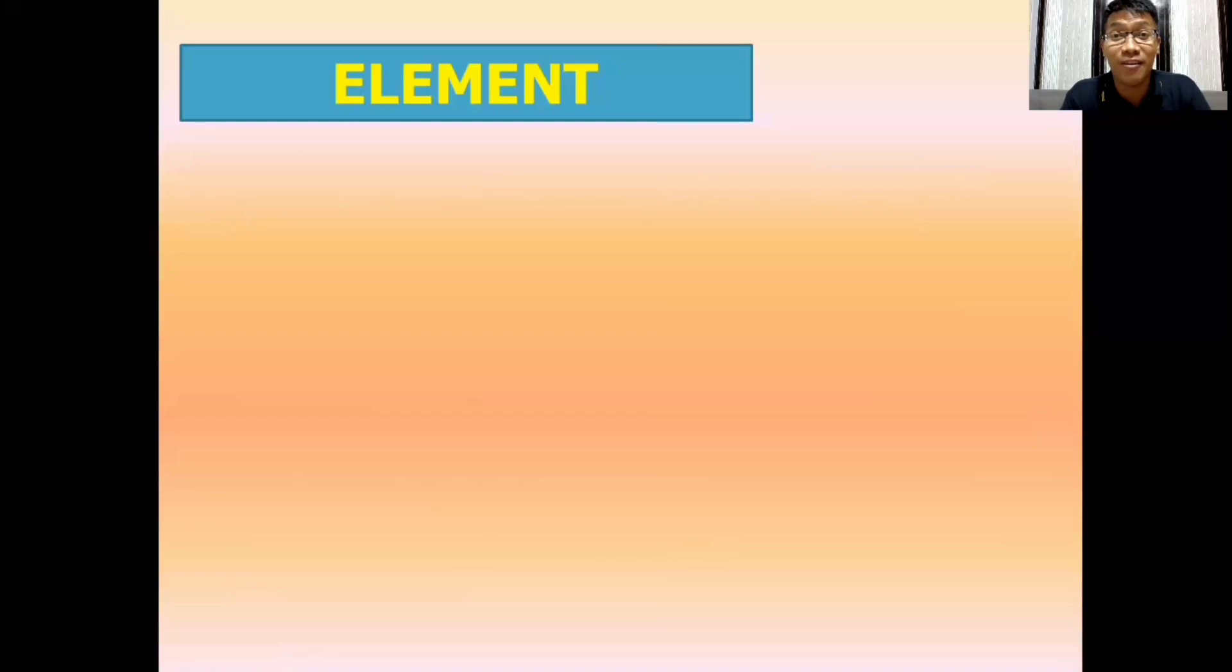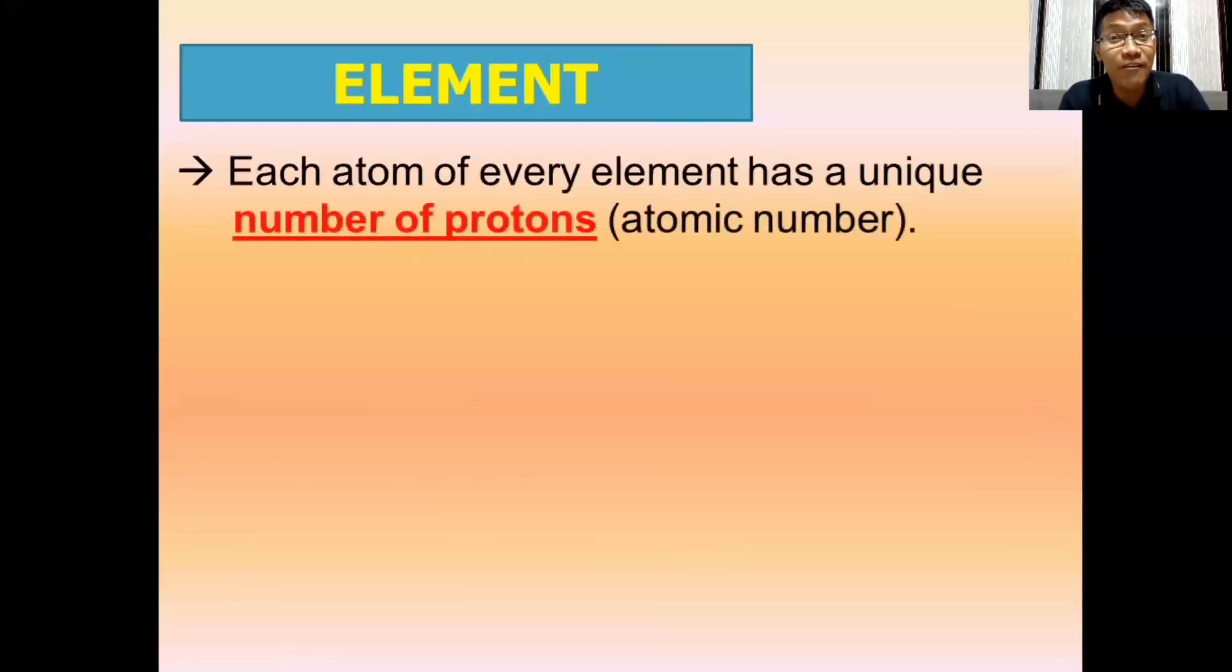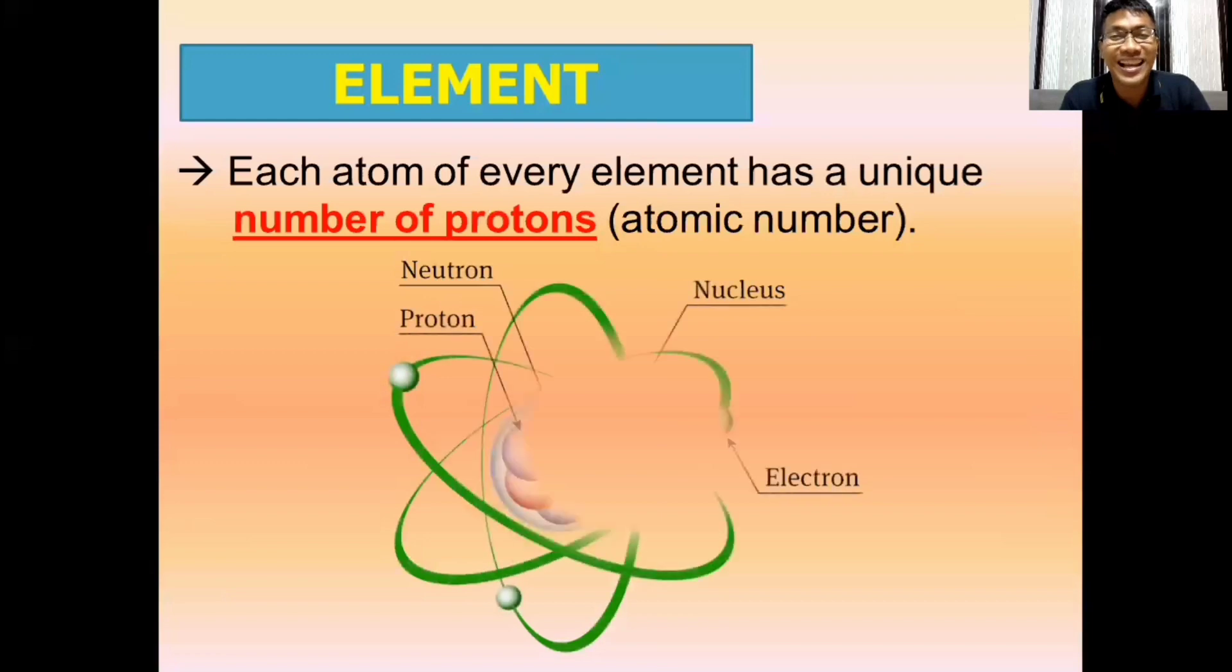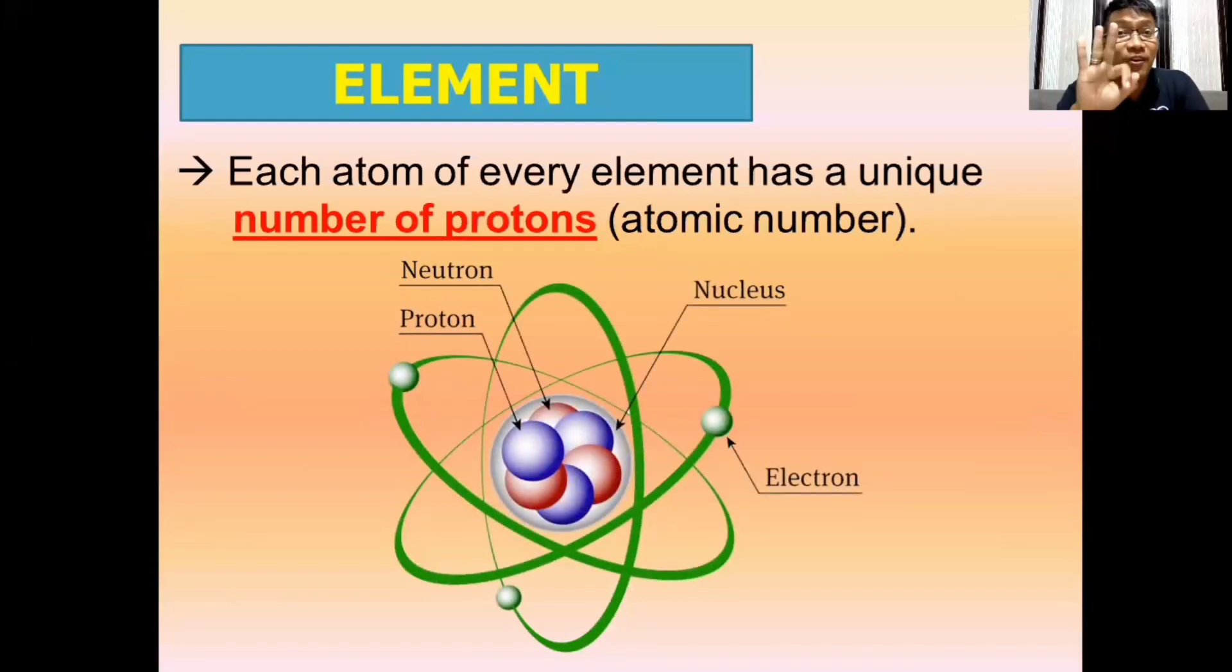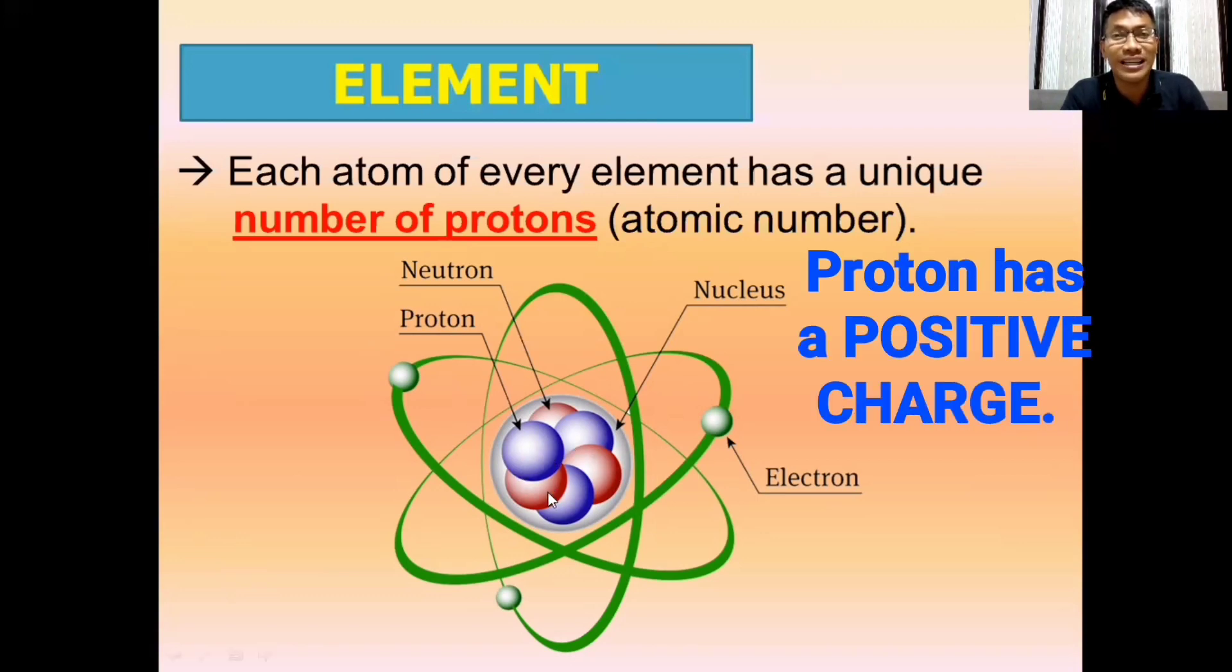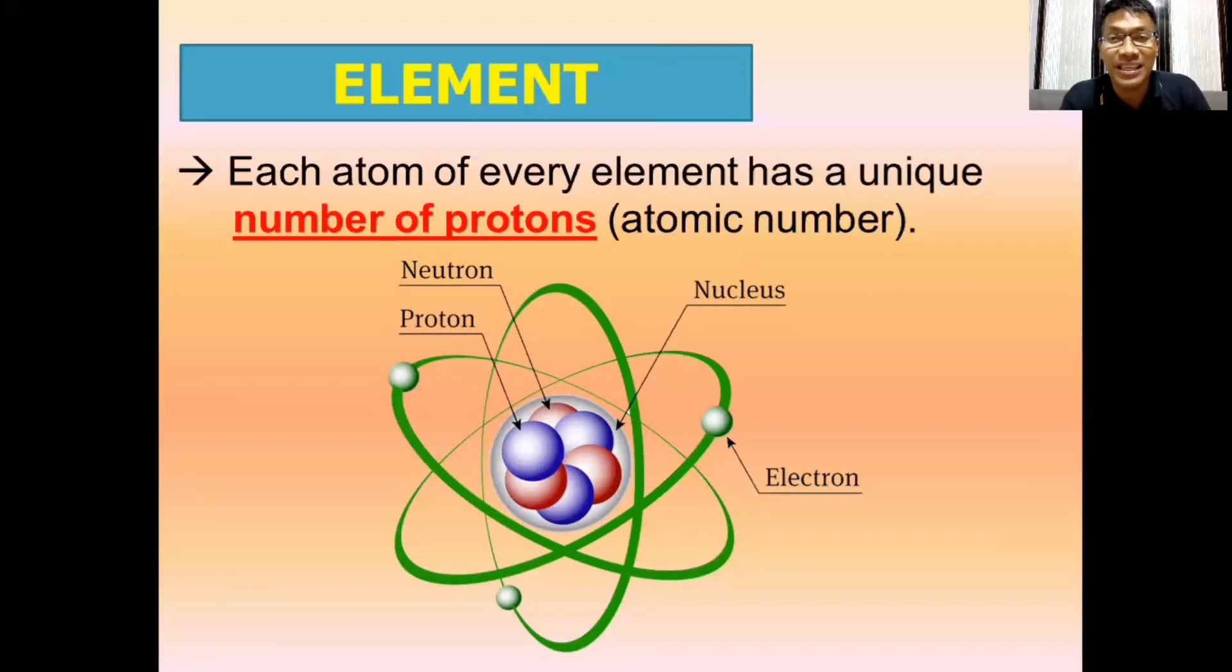And you need to be aware of the concept that each atom of every element has a unique number of protons. What do we mean by protons? An atom has three subatomic particles: the proton, neutrons, and electrons. The proton is the subatomic particle with a positive charge. And this can be found inside the nucleus or in the central area of an atom. This means each element has its own number of protons. The number of protons of each element is described as, or also called as, atomic number.